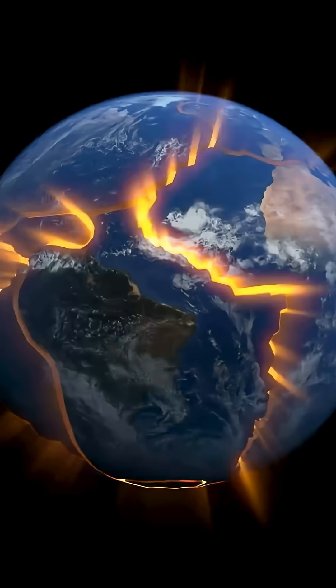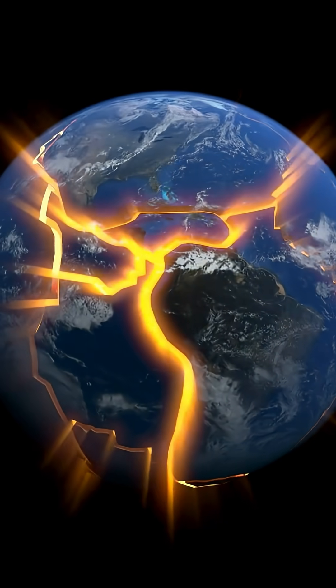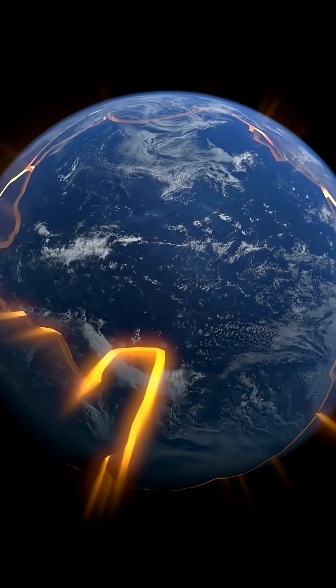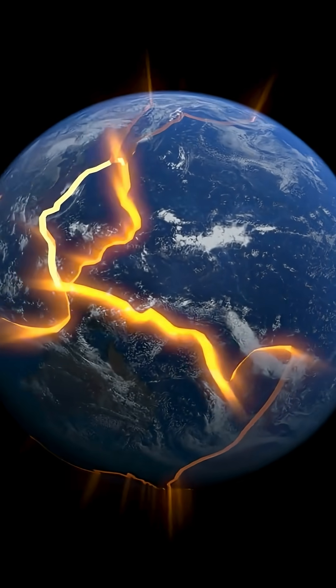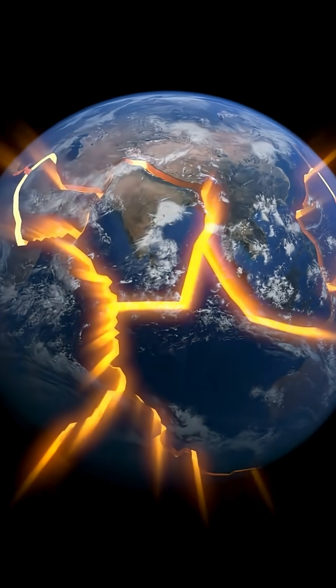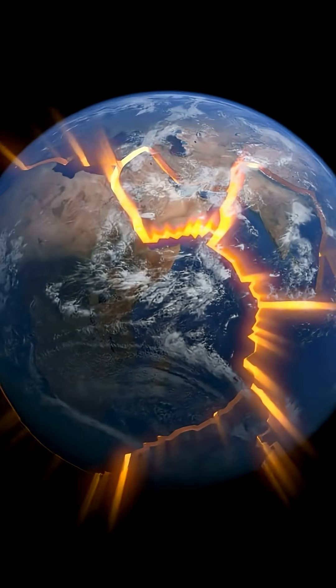Unlike most planets we've studied, Earth's surface never sits still. Plate tectonics constantly recycle the crust, building mountains, triggering earthquakes, and even balancing carbon dioxide levels over time. That slow churning helps stabilize the climate, keeping Earth livable for eons. It's geology doing climate control before it was cool.